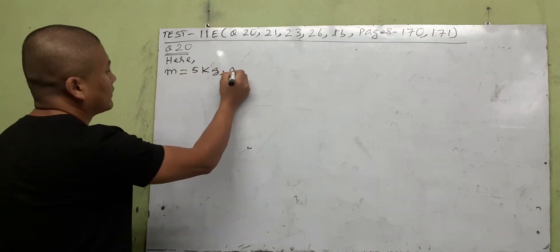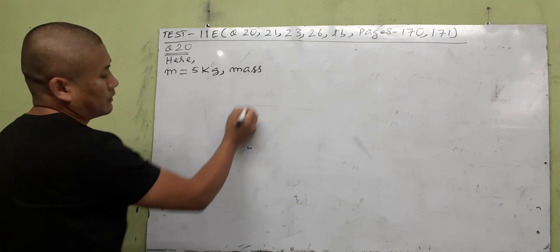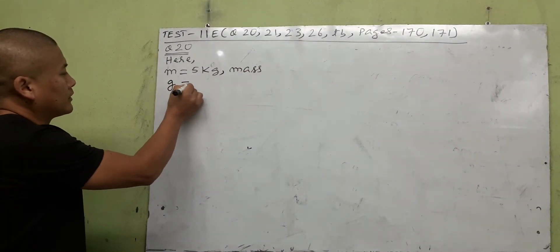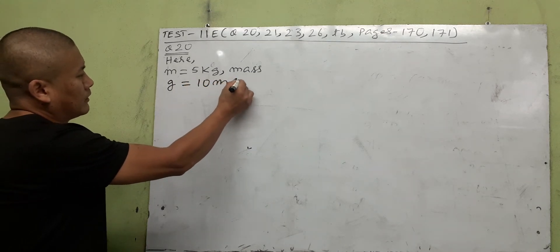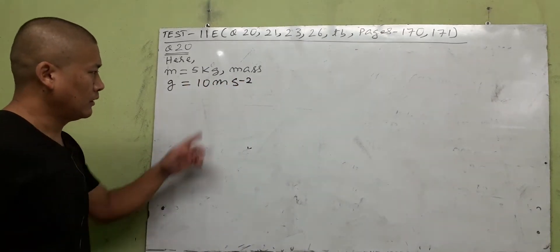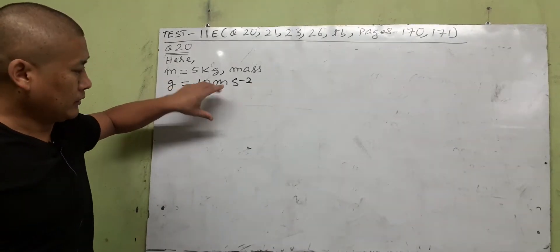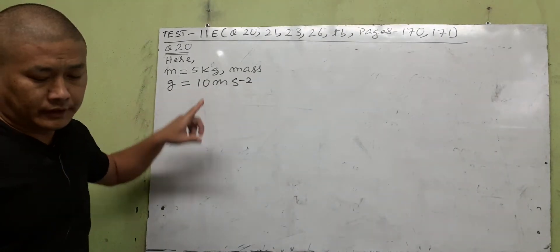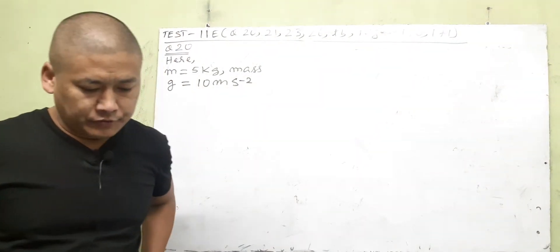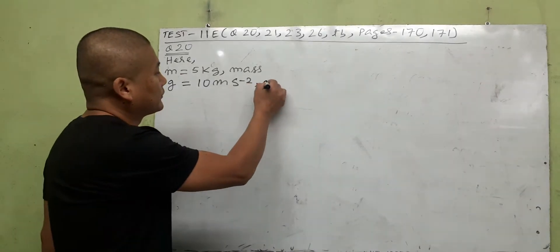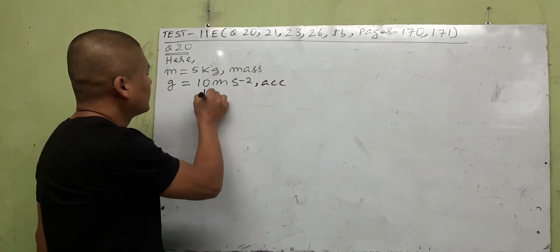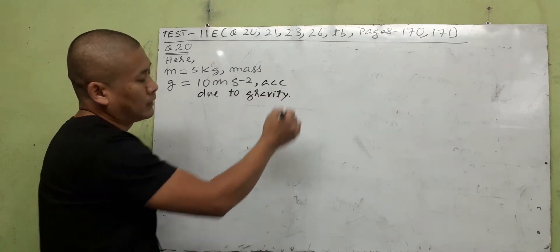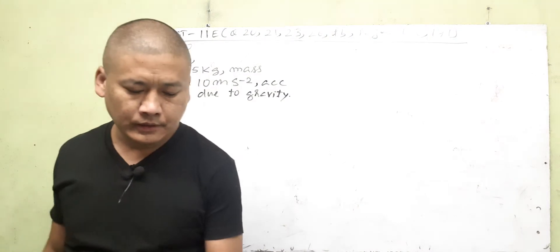From the question, m indicates the mass of the concrete block, which is 5 kg. According to the textbook answer, g is taken as 10 meters per second squared — not 9.8 — since that is what the back of the book uses. This is the acceleration due to gravity, a constant value on Earth.